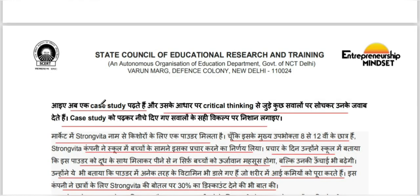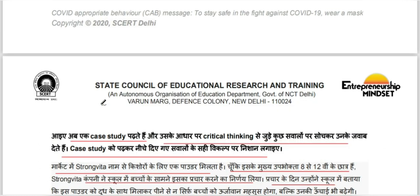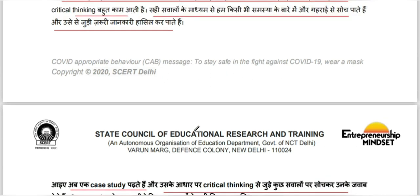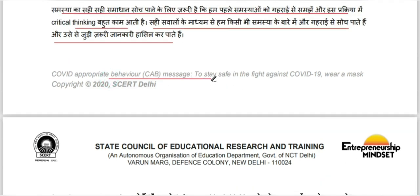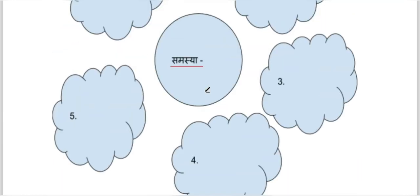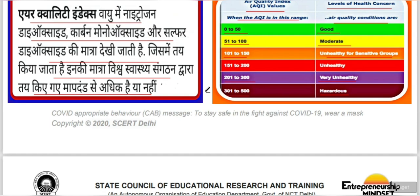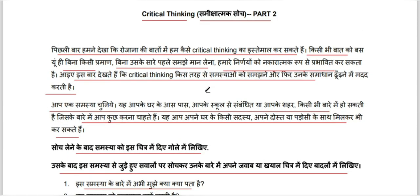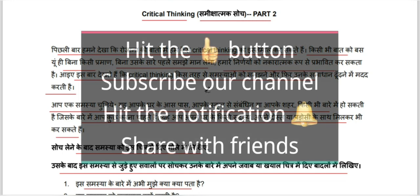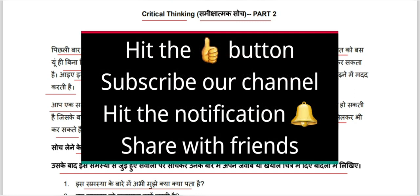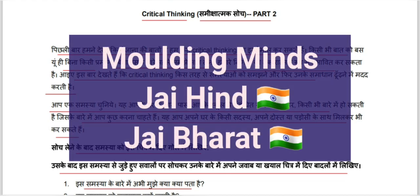So here our worksheet is complete, and from this worksheet you have also learned how you can save yourself by applying critical thinking and how you can solve your problems. Lastly, there is a COVID-appropriate behavior message: to stay safe in the fight against COVID-19, wear a mask. And here our worksheet ends. Please do let me know in the comment box how you found this Critical Thinking Part 2 and the Air Quality Index example, and share your suggestions. If you like this video, hit the like button, subscribe to our channel, hit the notification bell, share with friends, and keep watching and supporting our channel Moulding Minds. Jai Hind — see you all in the next video.